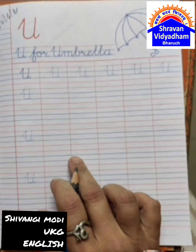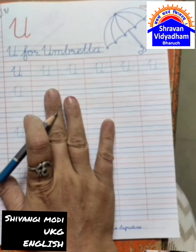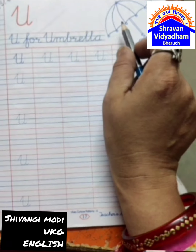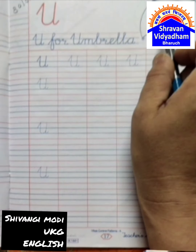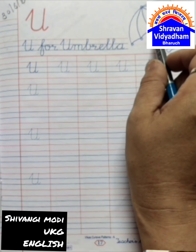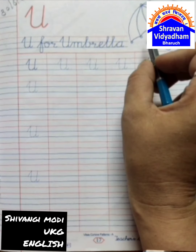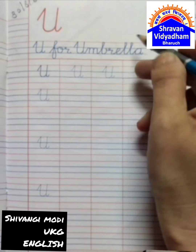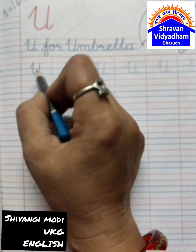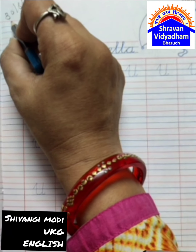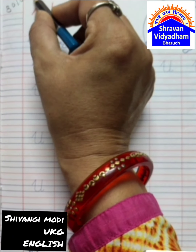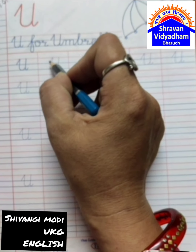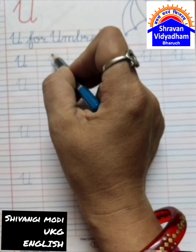Today our subject is English. Open your capital cursive book. Today we will write U. U for Umbrella, U for Unicorn, U for Universe, U for Utensil. Write down the date and first we are tracing the capital U.